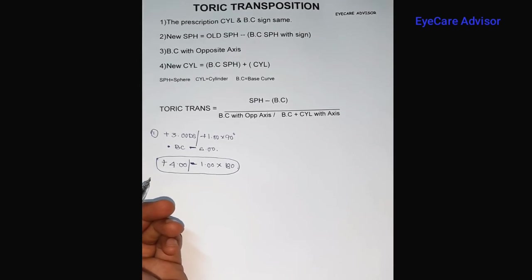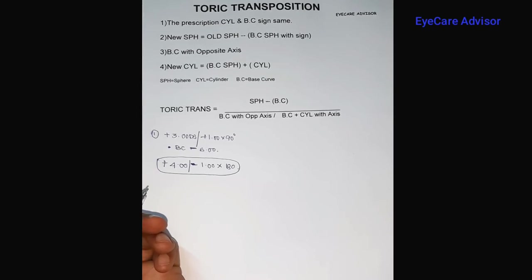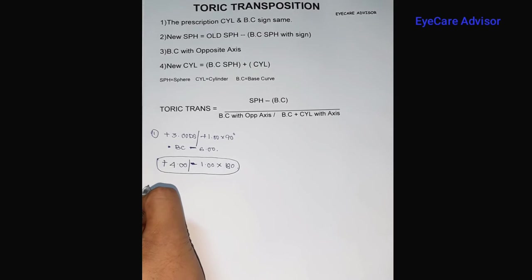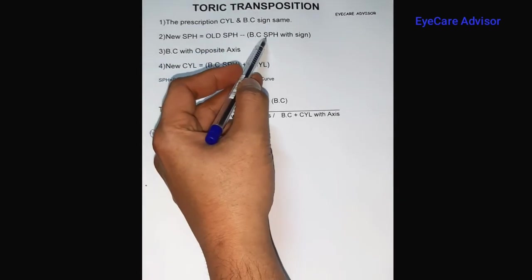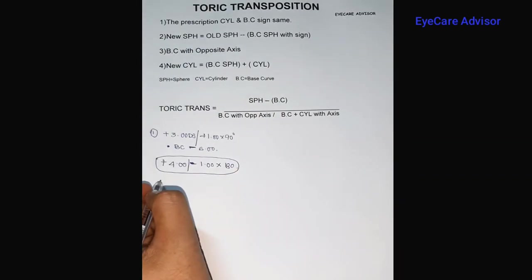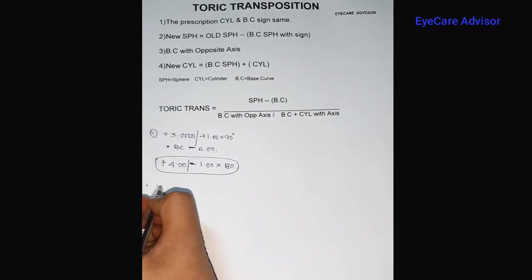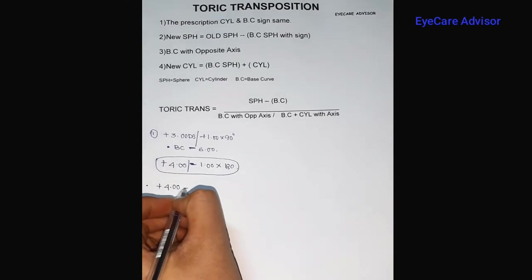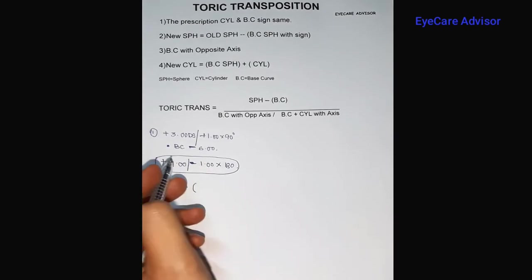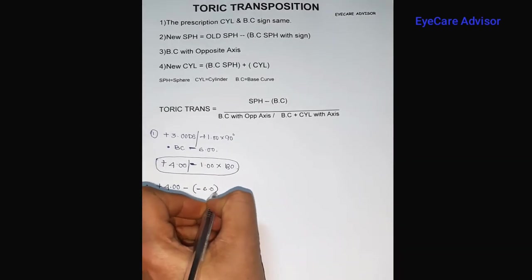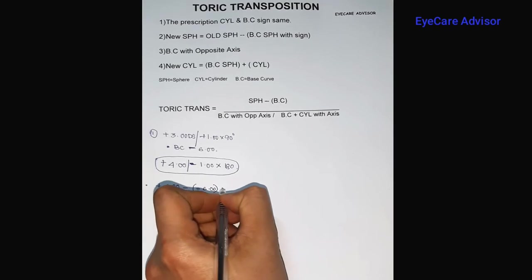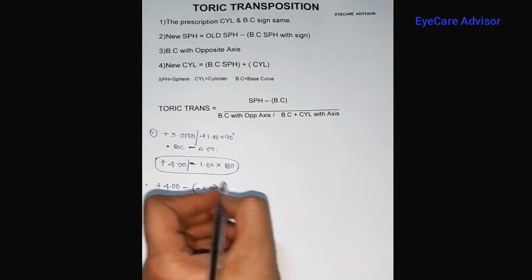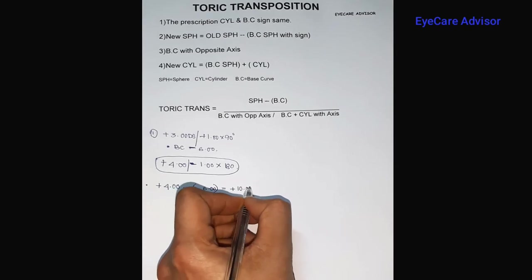Now we will do the calculation. The next step is to find the new sphere. The new sphere equals the old sphere minus the base curve sphere with sign. The old sphere is plus four, minus the base curve of minus six. So plus four minus minus six becomes plus four plus six, which equals plus ten diopters.